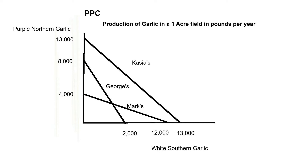If he put forward all that extra additional effort, he could be the white garlic king of northern Vermont, if that's what he wanted to do. From an accounting profit standpoint, it might make sense — maybe he's the local guy that sells it at a higher price and makes a little profit. But from an economic profit standpoint, it's better to go with the lower opportunity cost.